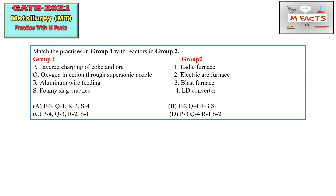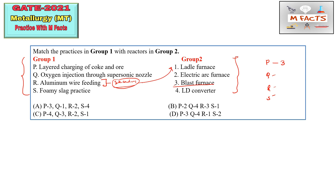The next question has some steelmaking practices in Group 1 and some furnace names in Group 2 — we need to match the practices to the reactors. Write PQRS and match one by one. The easy one is blast furnace — layered charging of coke and ore is done in the blast furnace, so P you can match by 3. Aluminum wire fitting is part of secondary steelmaking and is done in the ladle furnace, so R you can match by 1. Foamy slag practice is very famous in the electric arc furnace, so S you can match by 2.